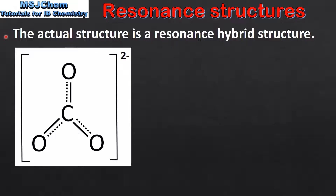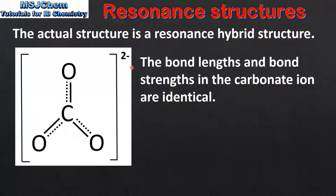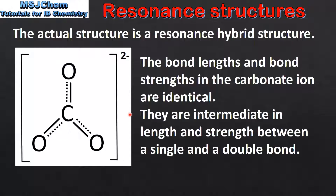The actual structure of the carbonate ion is what's known as a resonance hybrid structure. Here we can see one way of representing the resonance hybrid structure of the carbonate ion. In the resonance hybrid structure the bond lengths and bond strengths in the carbonate ion are identical. They are intermediate in length and strength between a single and a double bond.